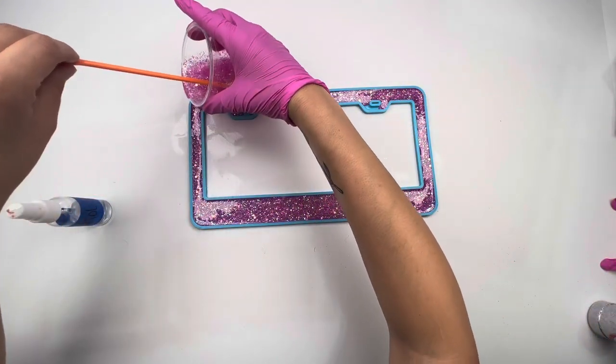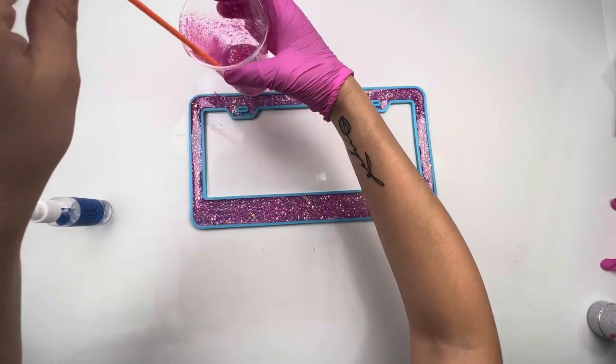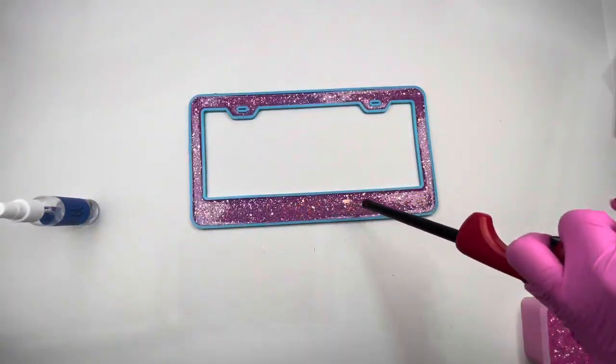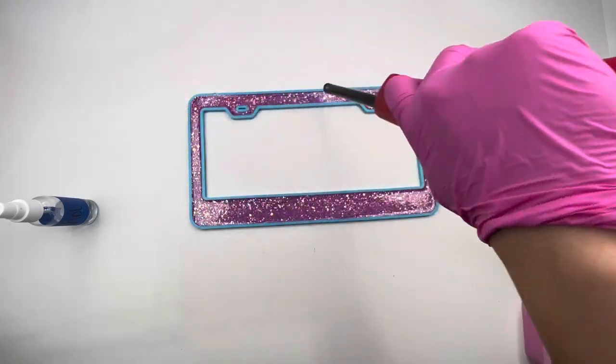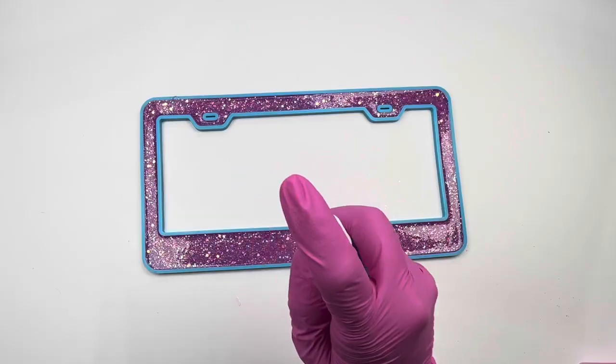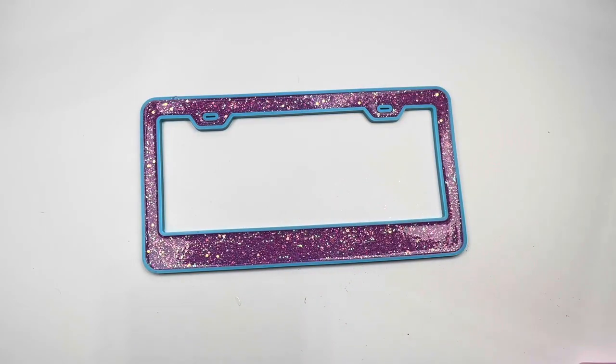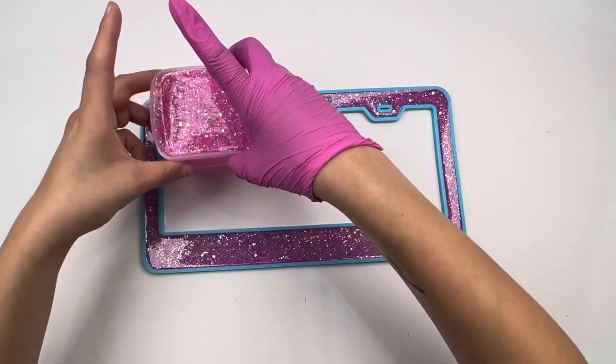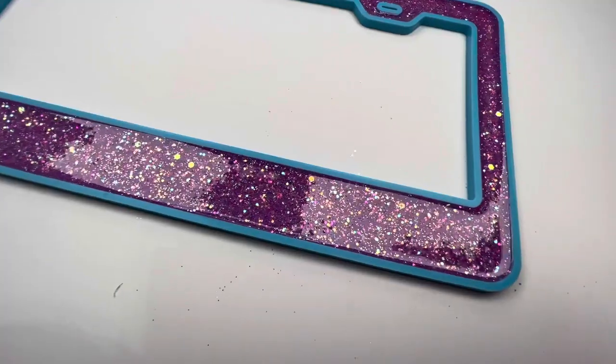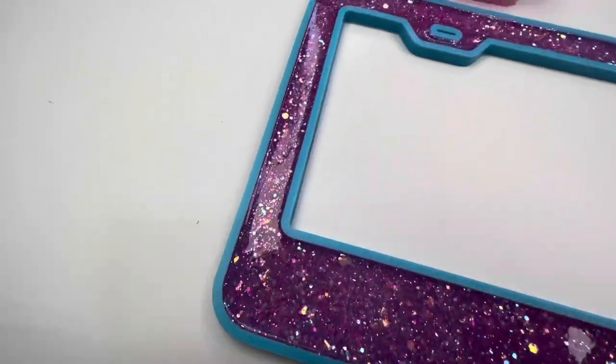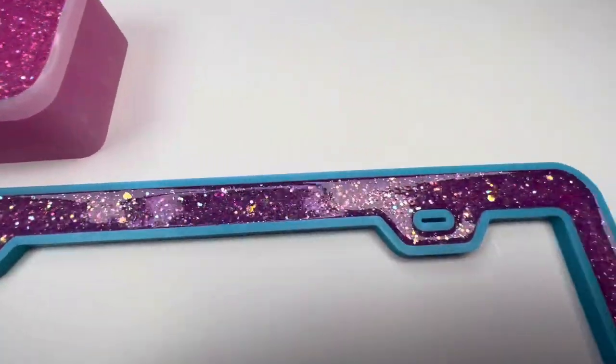Then, once I pour all of my epoxy in there, and don't worry, I had a lot left, but I put it inside of a mold. I'm going to use my little fire starter that we use for barbecues and just kind of pop any bubbles that are on the surface. But just to make sure I'm not missing anything, I spray with 99% alcohol. And I let this frame sit overnight to get super duper hard.